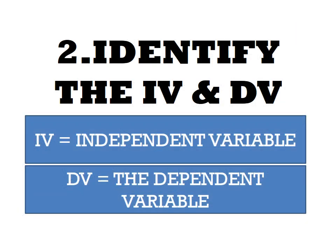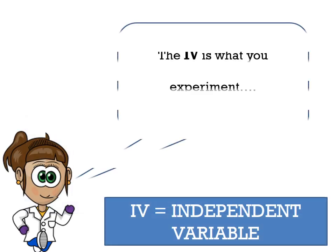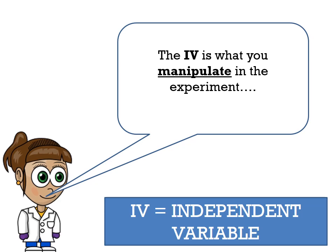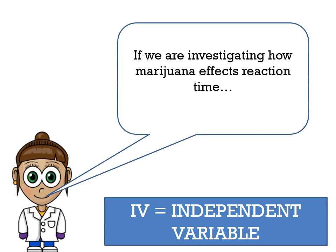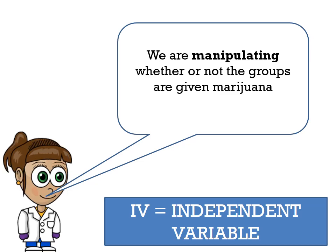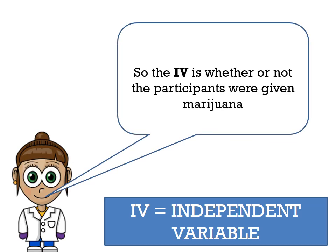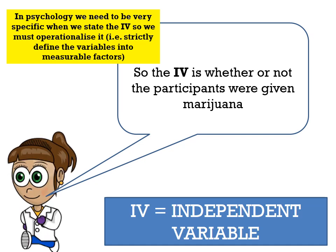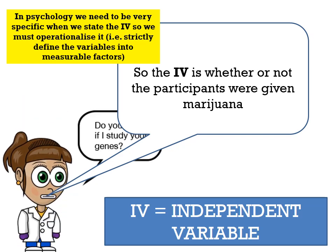The next thing is to identify the IV and the DV. The IV stands for independent variable and the DV stands for dependent variable. The independent variable is the thing that we manipulate — the thing we change in the experiment. If we are investigating how marijuana affects reaction time, we are manipulating whether or not the groups are given marijuana. In psychology, we need to be very specific when stating the IV, meaning we must operationalise it — strictly define variables into measurable factors.